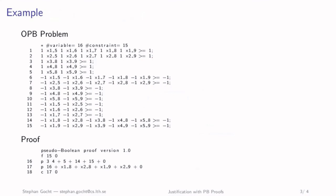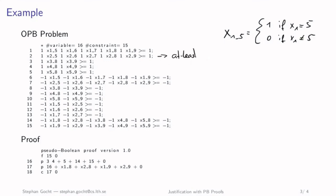A proof looks like: load the formula, then compute with the constraints by adding them together — written in Polish notation where the plus sign appears afterward. Adding constraints three and four, then five, fourteen, fifteen, and so on, eventually derives a contradiction: constraint 17 is declared a contradiction, meaning 0 ≥ 1. All steps are very simple to verify. A CP solver doing AllDifferent propagation can always produce a proof like this, and you can certify that the solver's answer is correct.